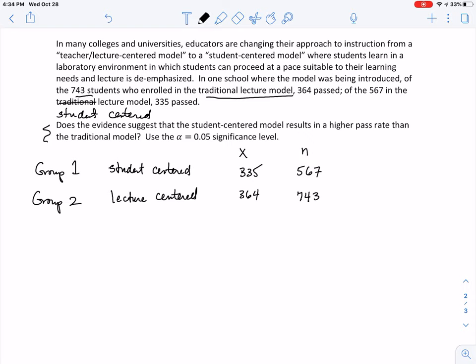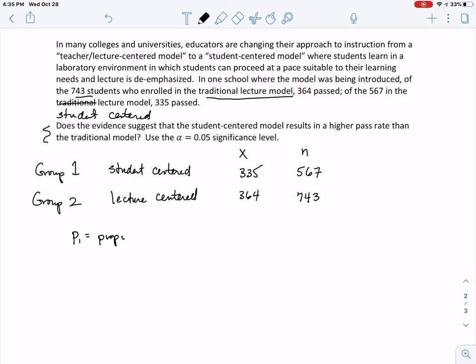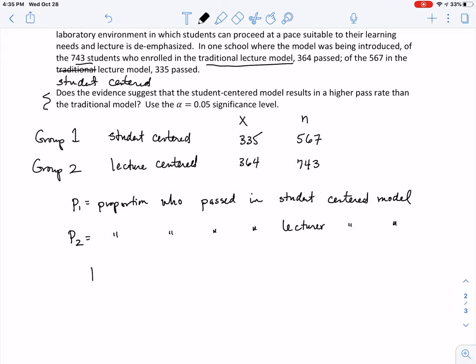So then, does this evidence suggest that the student centered model results in a higher pass rate than their traditional? So, if we let p1 equal the proportion who passed in the student centered model, and let's p2 equal the proportion who passed in the lecture centered model. If there's no difference between these two teaching methods, these two proportions should be equal to each other. Now, our alternative, what we're trying to find out, is that the student centered is that higher than the lecture. Since I've labeled group 1 student center, that would mean the proportion 1 would be greater than proportion 2.